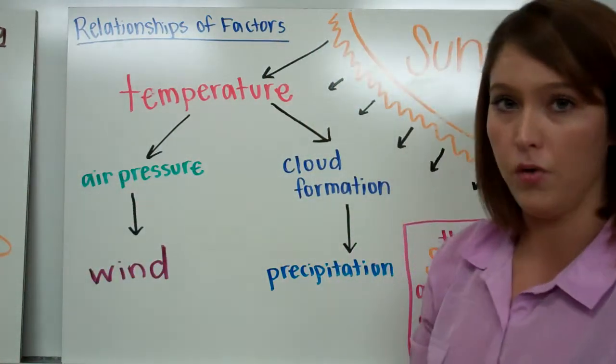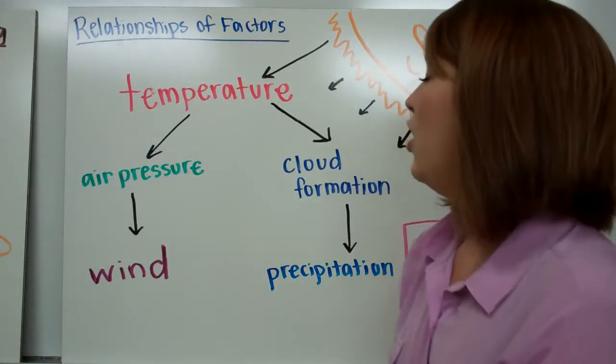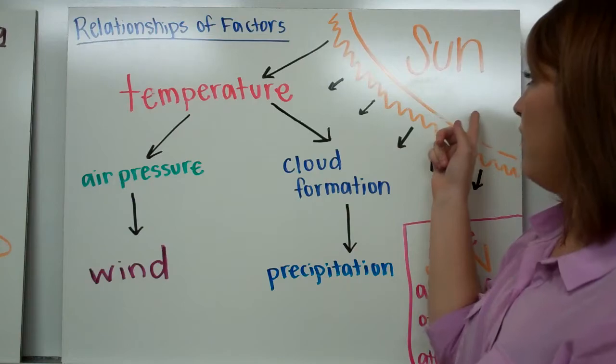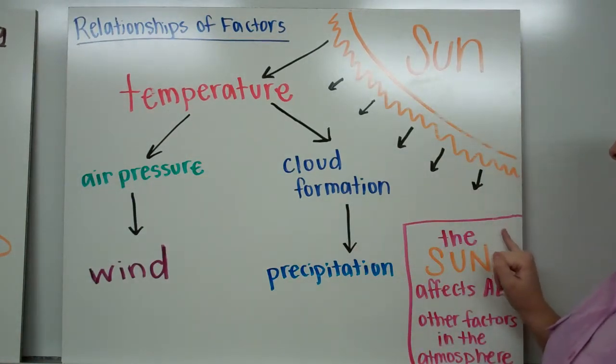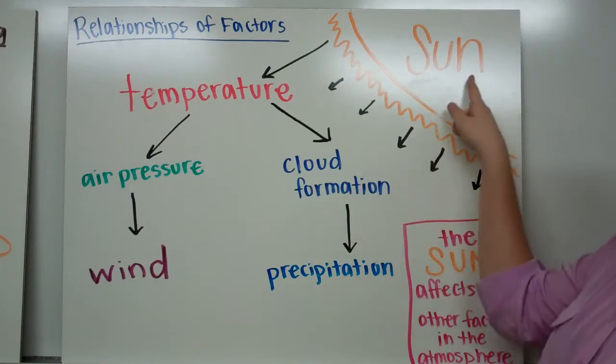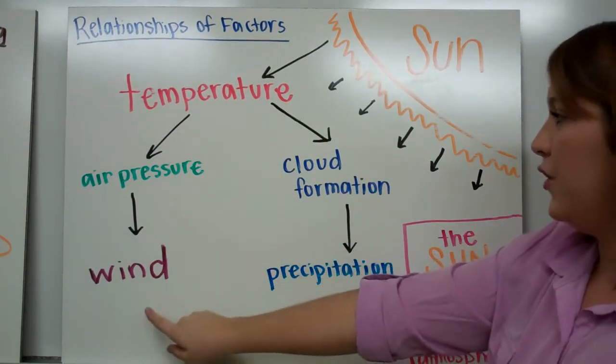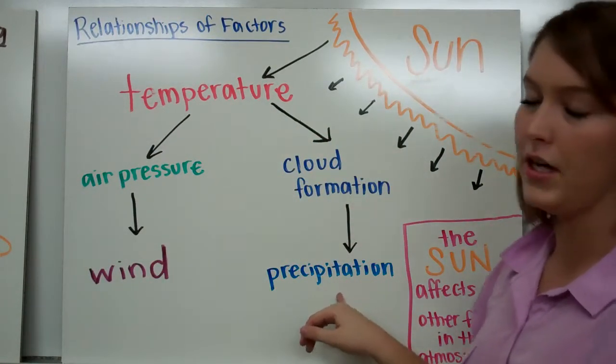All of these factors that we just talked about are related in some way or another, and they're all unified by the one driving factor in the atmosphere, which is the sun. The sun affects all other factors in the atmosphere. The sun affects temperature, air pressure, wind, cloud formation, and precipitation as well.